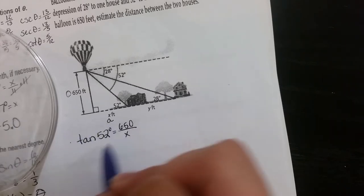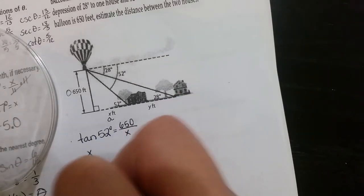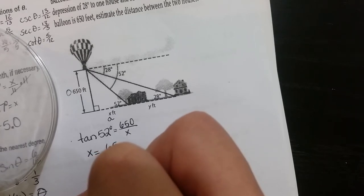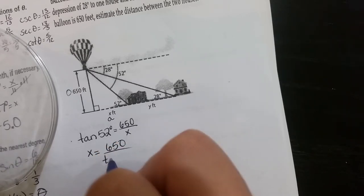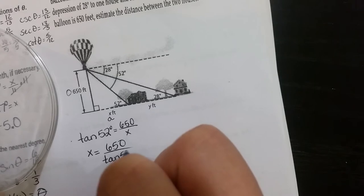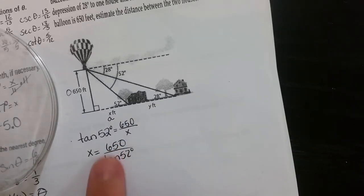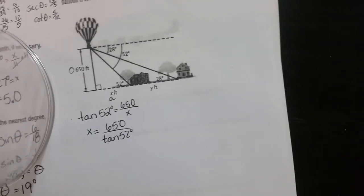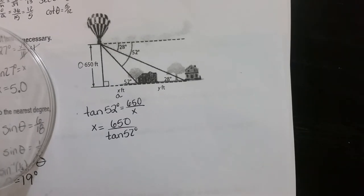So X will be 650 divided by tan 52. And I'm actually going to leave this in this format so that my answer can be the most accurate as possible.